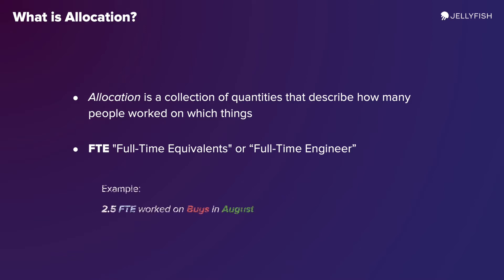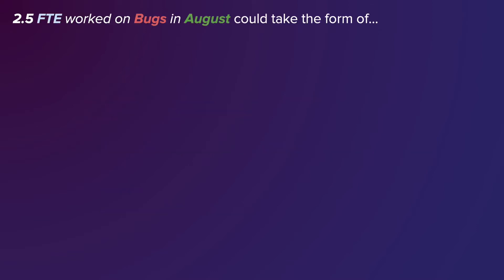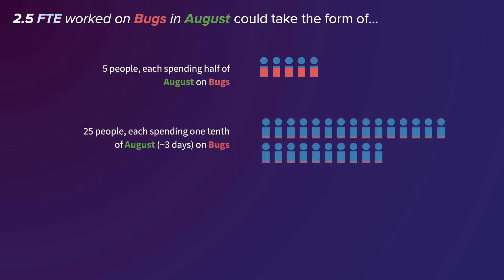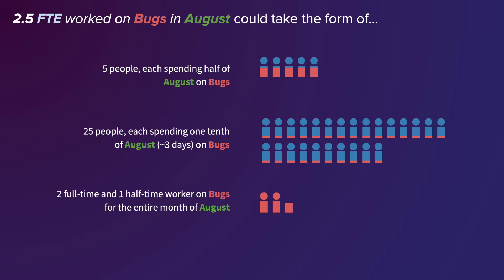Based on Jellyfish insights, I know that 2.5 FTEs worked on bugs in August. Let's break down that 2.5 FTEs to see how it applies across a team. That could be 5 people spending half of August on bugs, or 25 people spending a tenth of August — approximately 3 days each — on bugs, or 2 people working full-time on nothing but bugs in August with a third person spending half of their time on bugs.